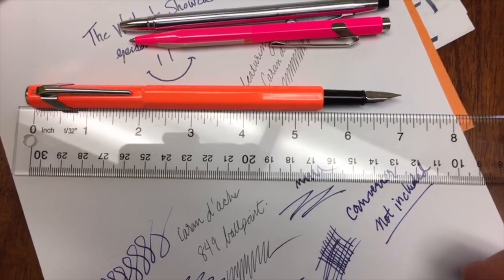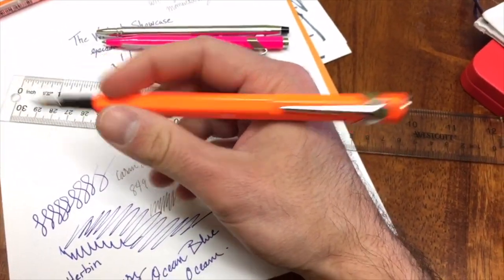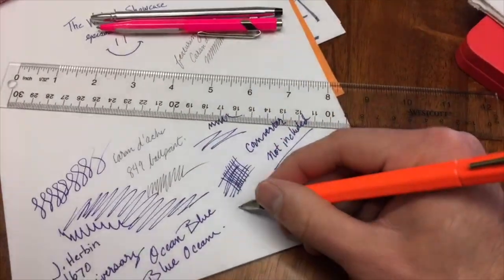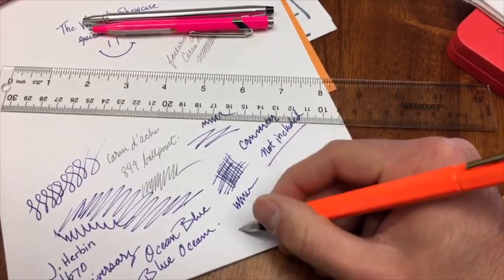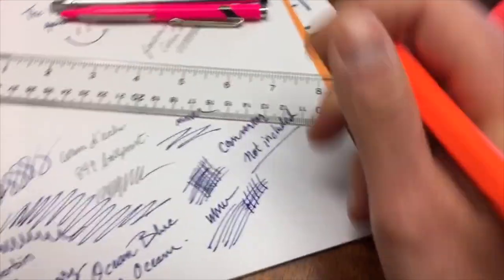I brought my ruler out because we were interested in dimensions. With the cap posted, seven inches. That's a long posted pen, but since it's only made out of aluminum with a fairly light weight cap, it doesn't feel that bad posted on the back.